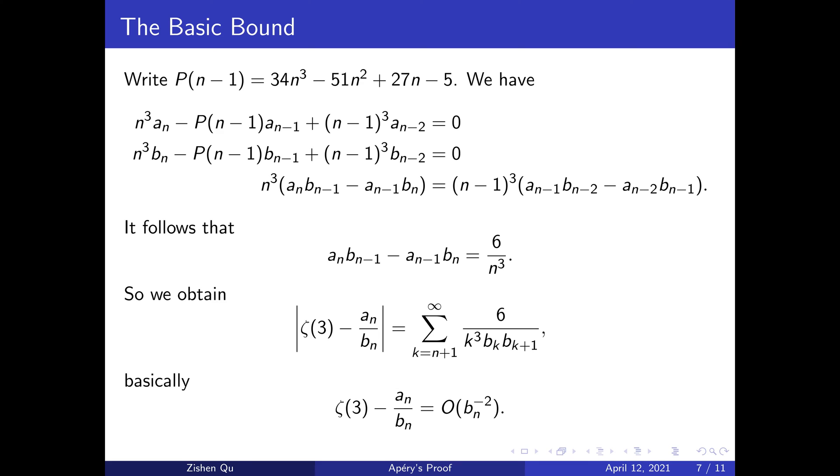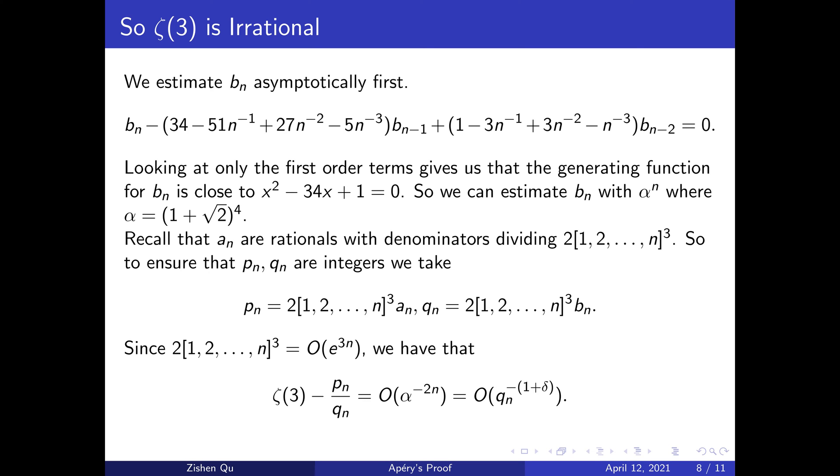We start by taking the second equation on this slide and dividing both sides by n³. We aim to estimate b_n by considering this modified equation. Here it is as the first equation on the slide written out in expanded form.